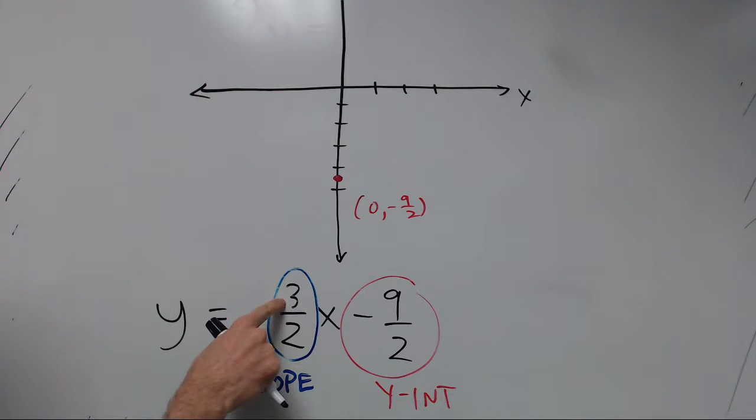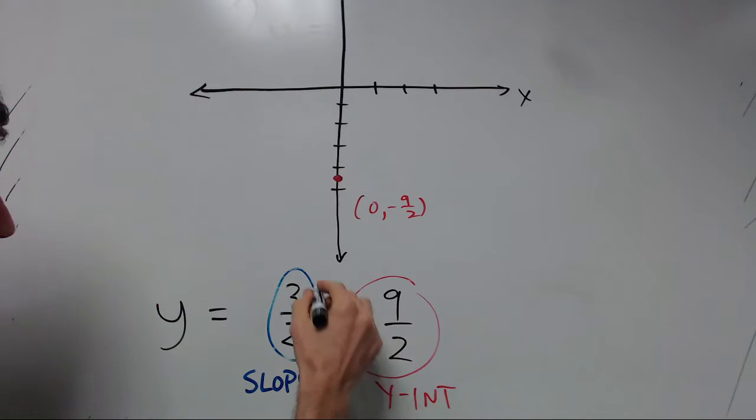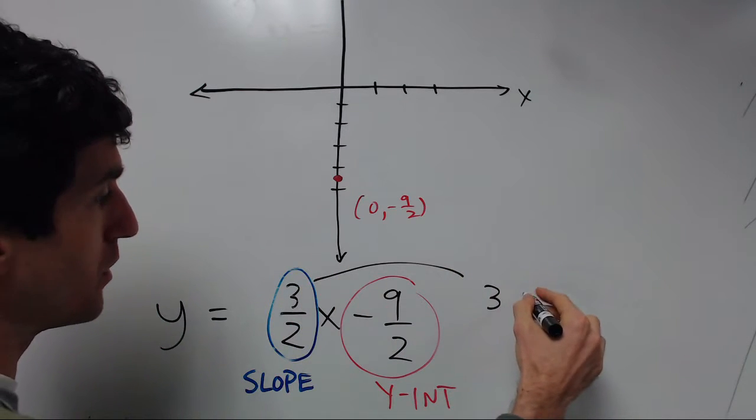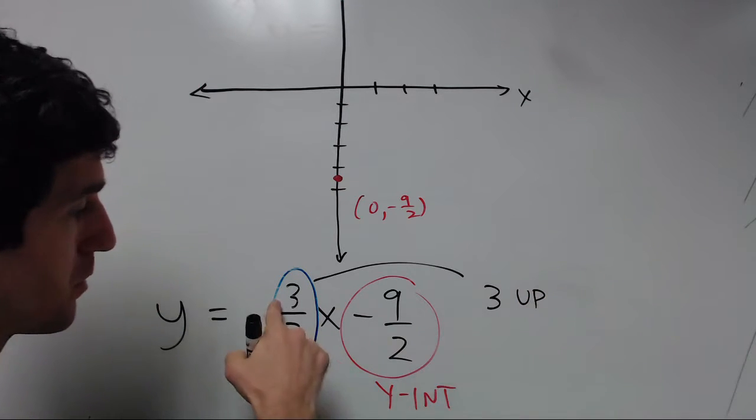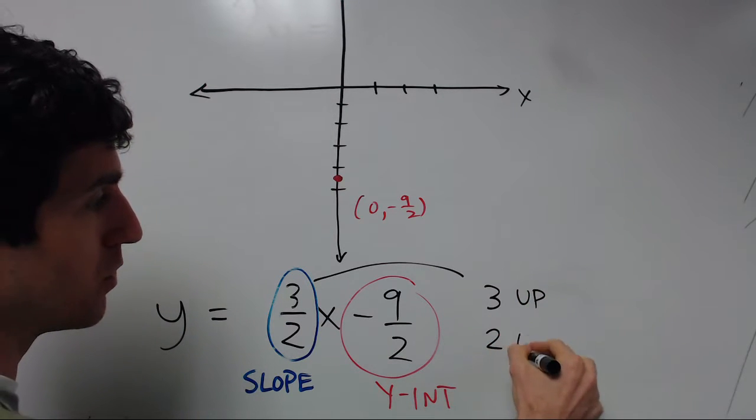And the top number tells you to go up or down. If it's negative, go down. If it's positive, go up. And it tells you how many units. And then this one tells you how to go right. So what this tells us is that we go 3 up, since it's positive 3, and 2 to the right.